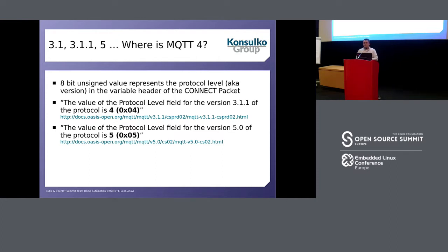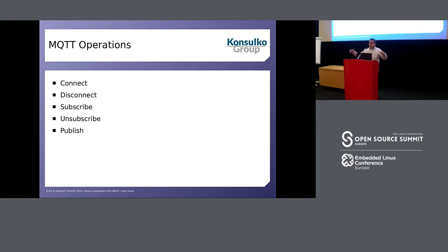Probably some of you are wondering what happened to MQTT 4. MQTT 4 doesn't exist because the 8-bit unsigned value that represents the protocol level in the CONNECT packet was already occupied by protocol version 3.1.1. Therefore, the latest version is MQTT 5. By the way, all the slides you see here have already been uploaded — there will also be recordings from this talk, and you can go to the conference website to download the slides.